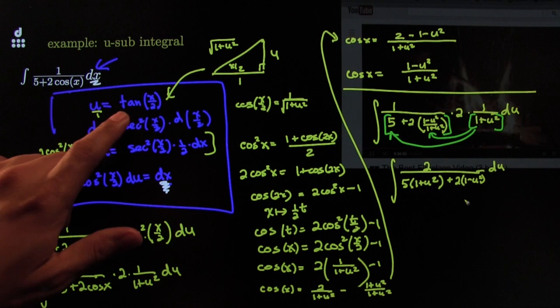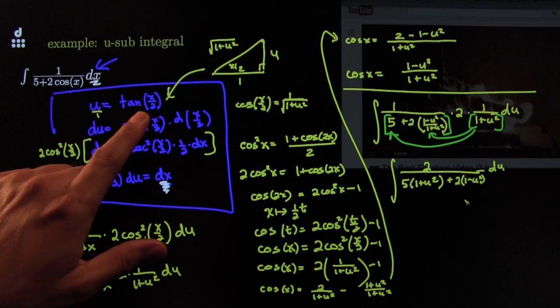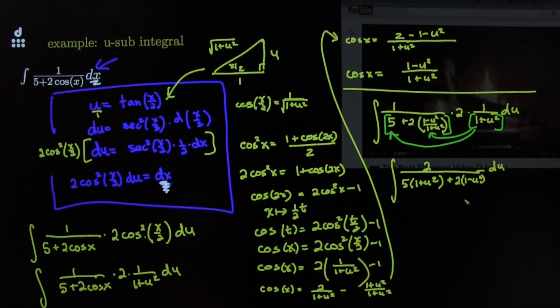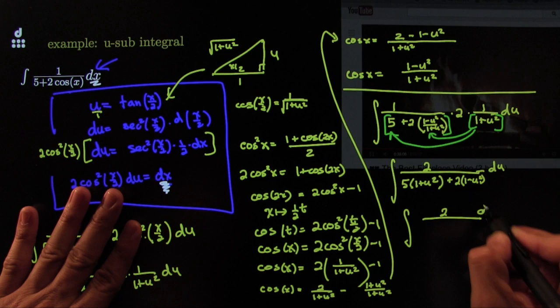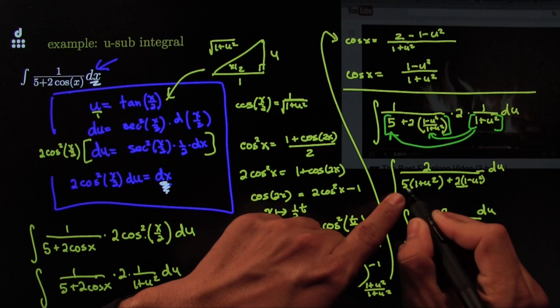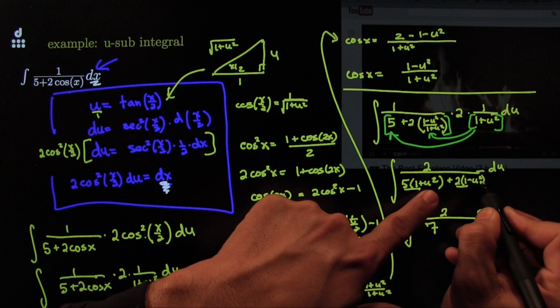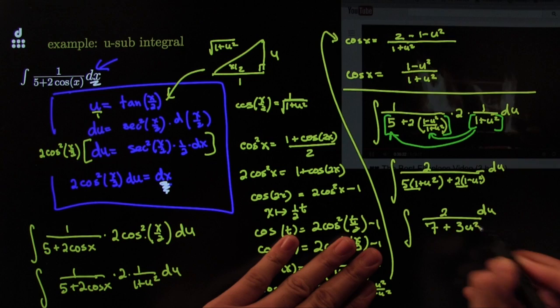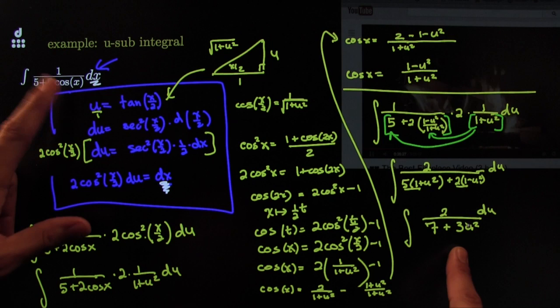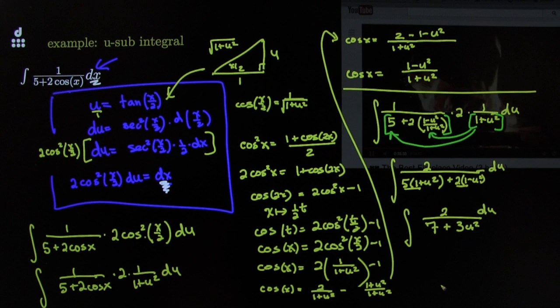Cleaning up: on the denominator, constants give 5 plus 2 equals 7, and for u squared terms I have 5 minus 2 equals 3, so this simplifies beautifully to the integral of 2 over (7 plus 3u squared) du. That's a much more doable integral — in fact, it's just some version of arctan. This substitution is called the sneakiest substitution in mathematics, made famous by a guy named Weierstrass.